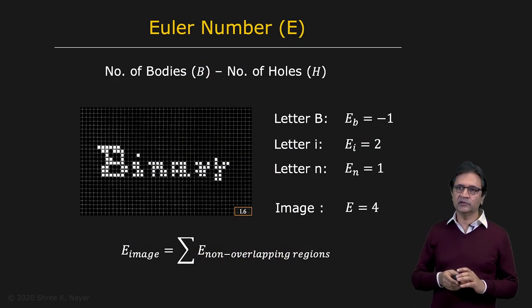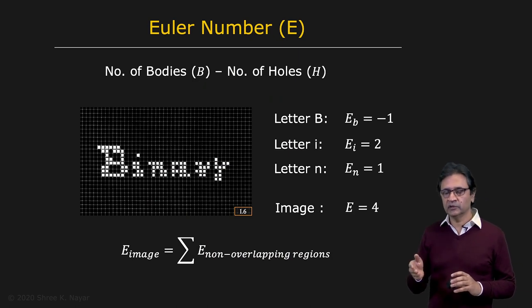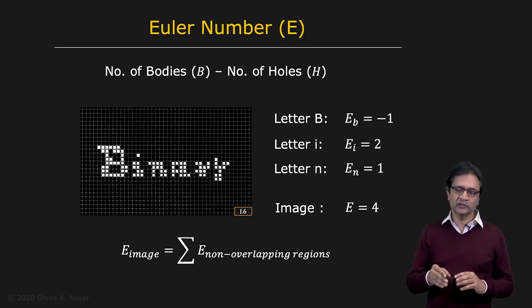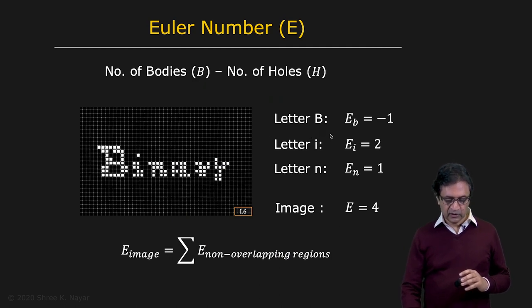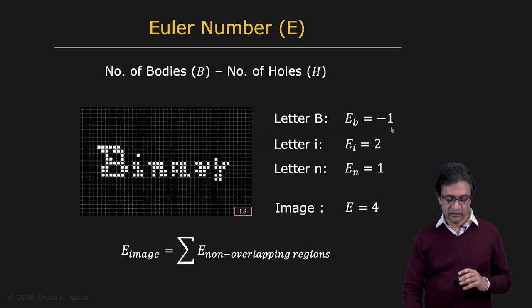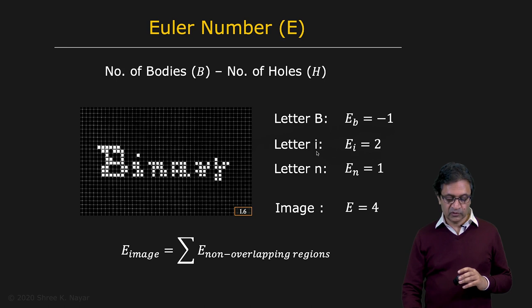Talking about structure, a very important concept is the Euler number. The Euler number is the number of bodies minus the number of holes. Looking at the letter B in this image, the Euler number is one body minus two holes, which equals minus one. For the letter I, it's two because it has two bodies and no holes. N is one. And the Euler number of the complete image is four.